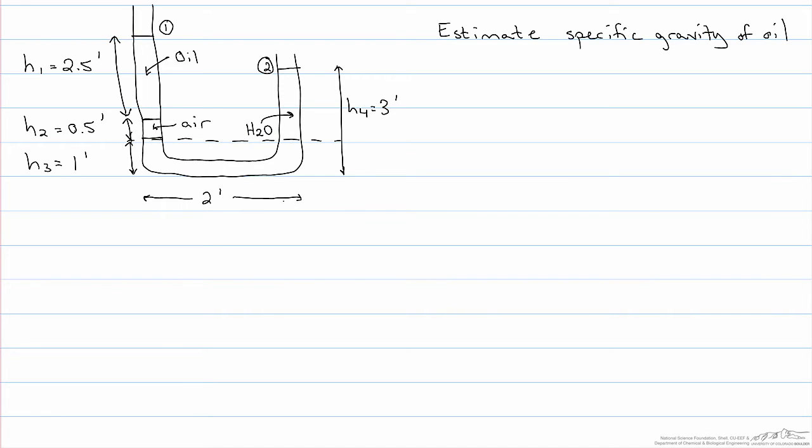So on the left-hand side down to the dashed line, the pressure is P1 plus the density of the oil times G times its height plus the density of the air times G times its height, and that must be equivalent to the pressure at that same vertical level on the right-hand side. So that is P2 plus the density of water times G times H4 minus H3.